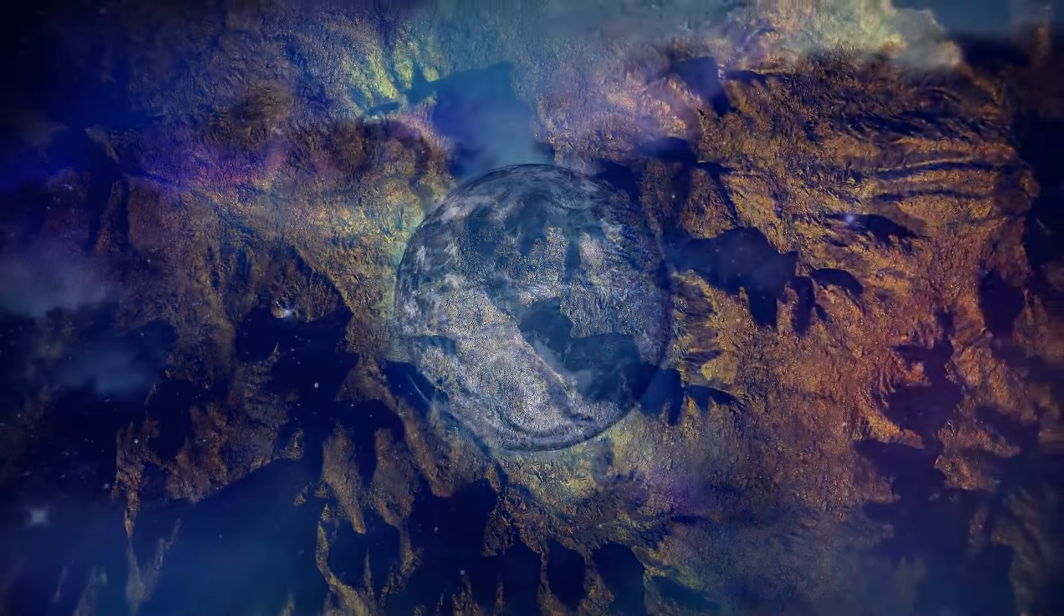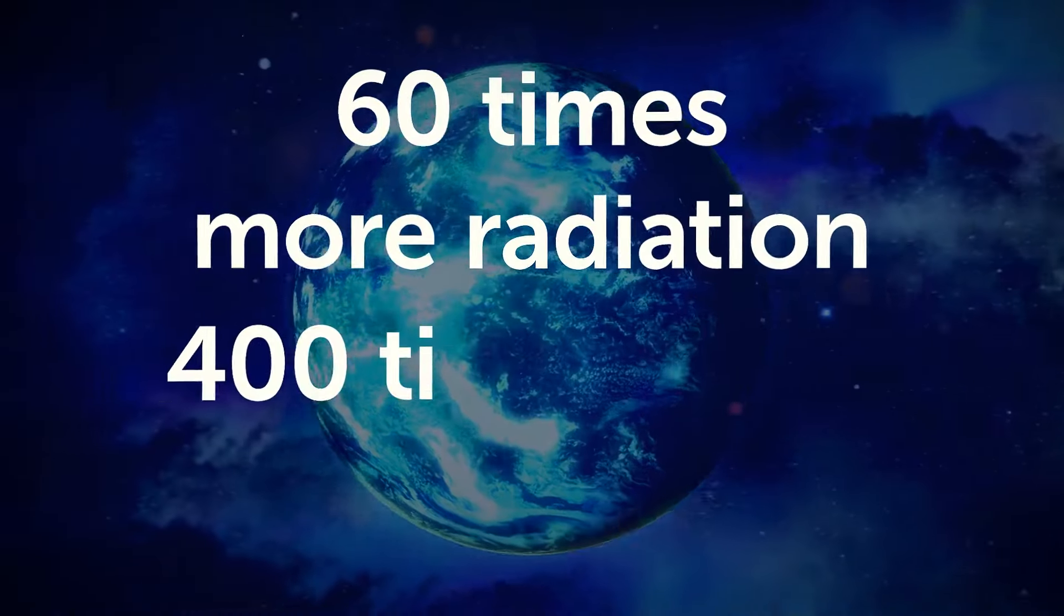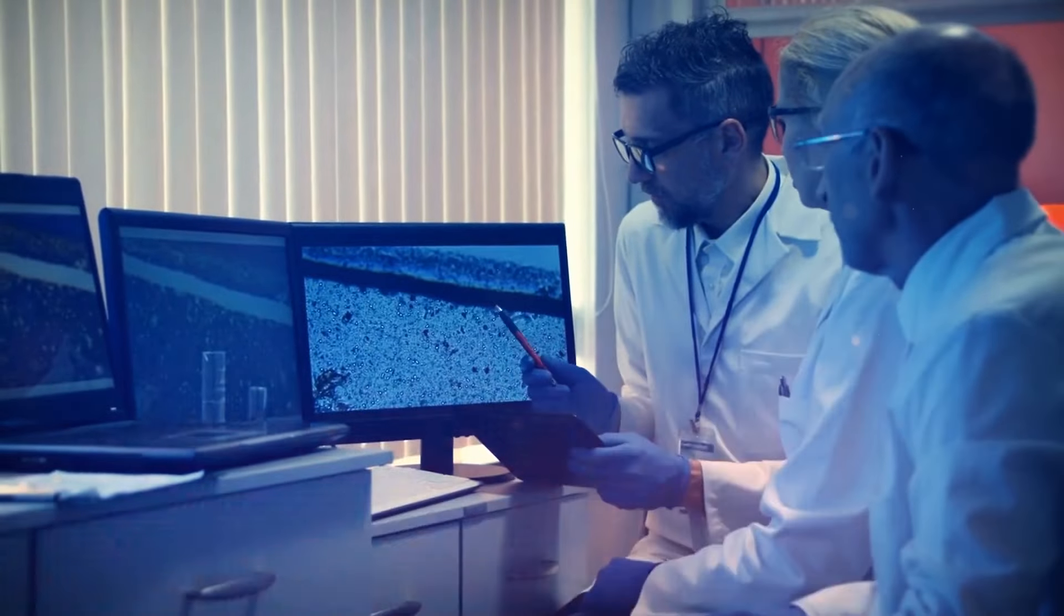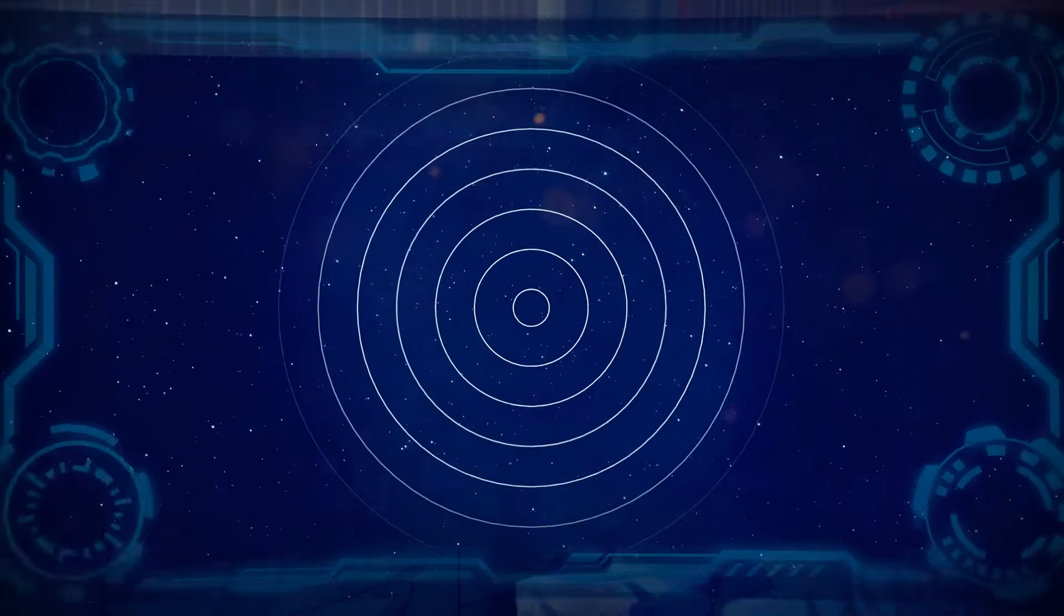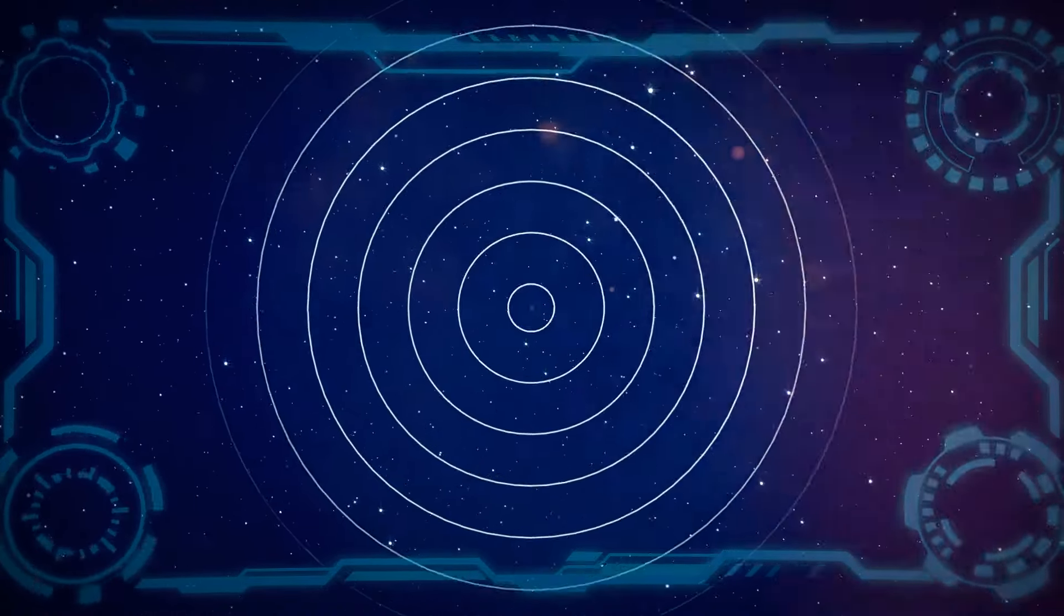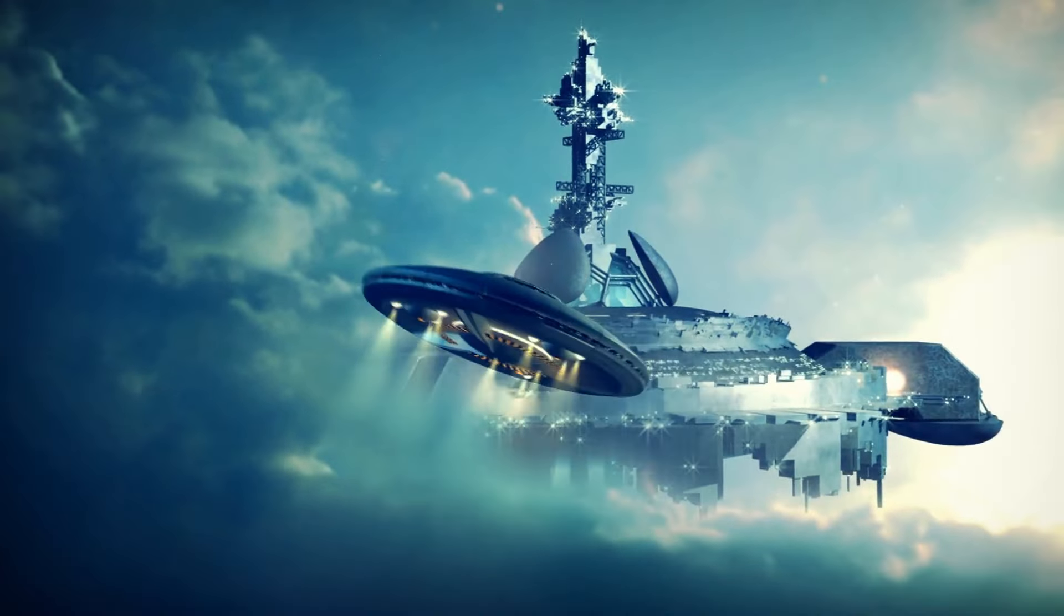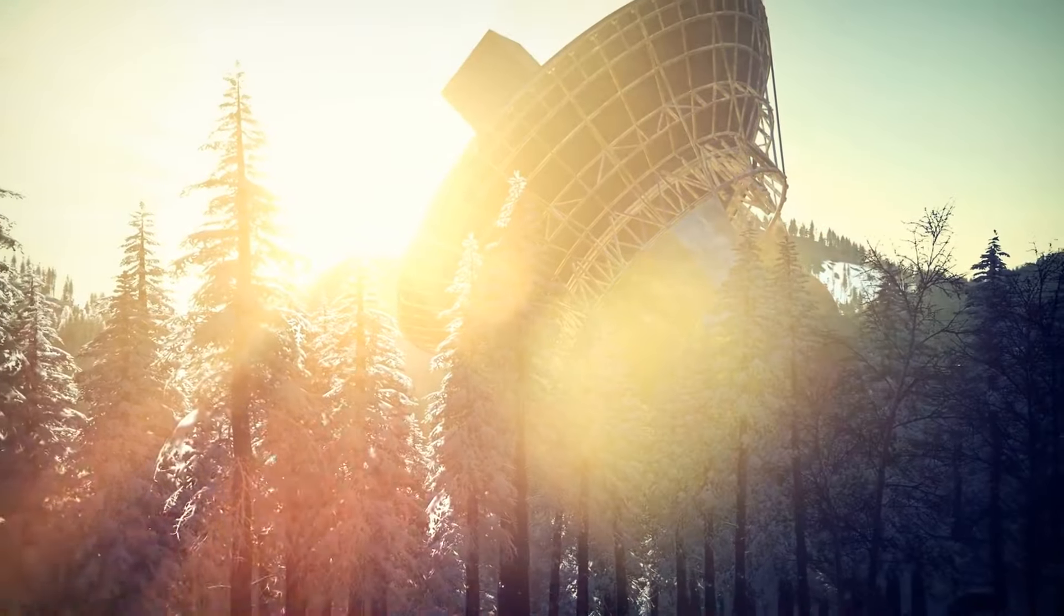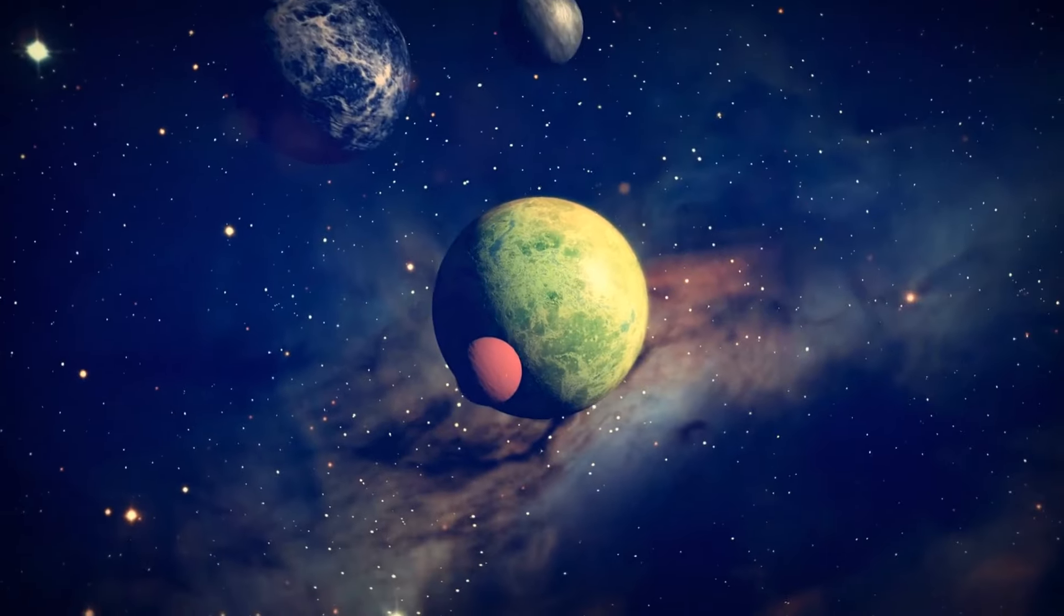Overall, the planet Proxima Centauri b receives 60 times more high-energy radiation and 400 times more X-ray radiation than Earth. Scientists have concluded that the probability of life here is 1 to 100 million. And while we don't know yet for sure if the signal was artificial or natural, the scenario of a bunch of spaceships coming to Earth is most likely possible.